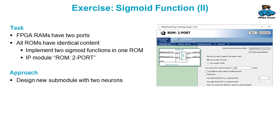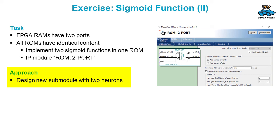If you have a larger word width, the ROM requires a lot of resources. So it would be a good idea to save resources by using a ROM with two ports. The FPGA RAMs have two ports. All ROMs have identical content, so you can implement two sigmoid functions in one ROM. This requires a new submodule that contains two neurons, so there are some changes that you have to make.